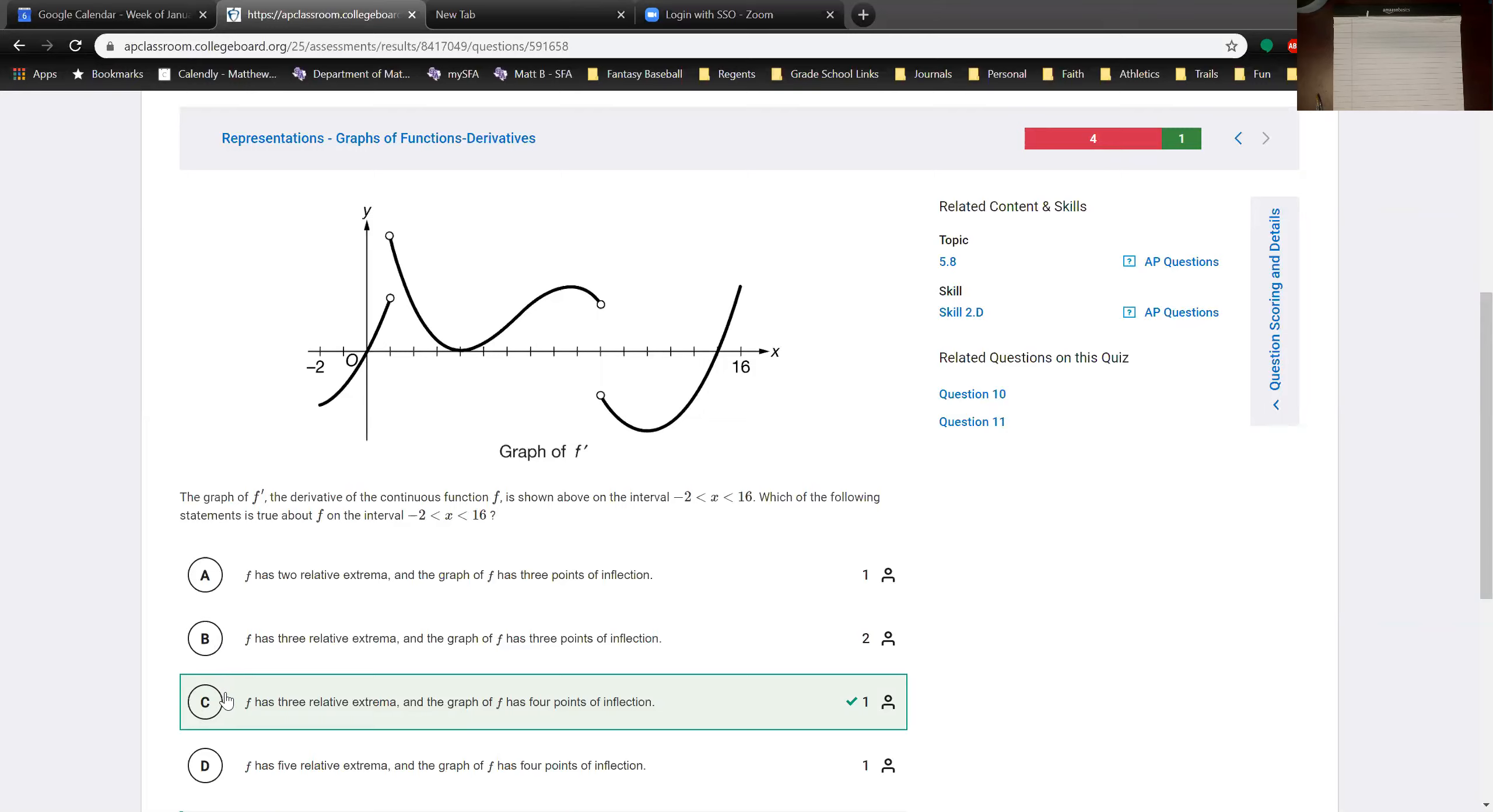And so with that you can make a guess but all we have to determine is there three inflection points or four inflection points. Now inflection points are going to be locations where f prime goes from increasing to decreasing or vice versa.